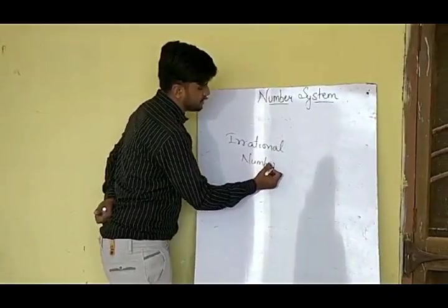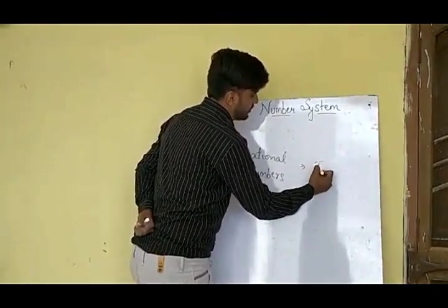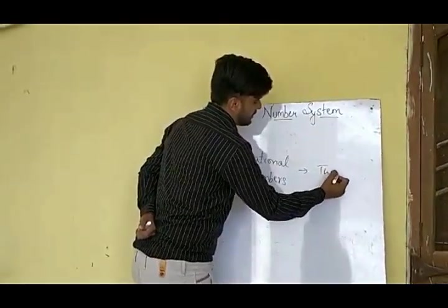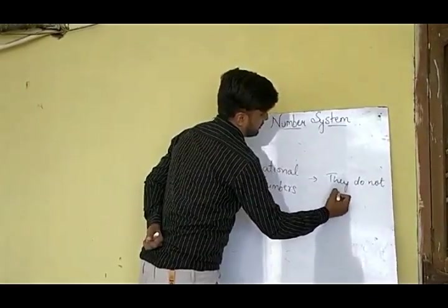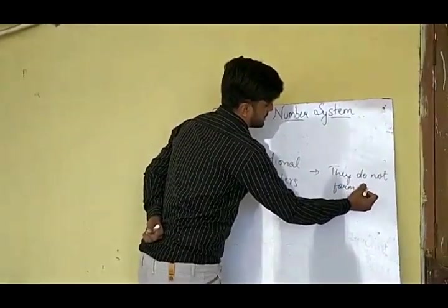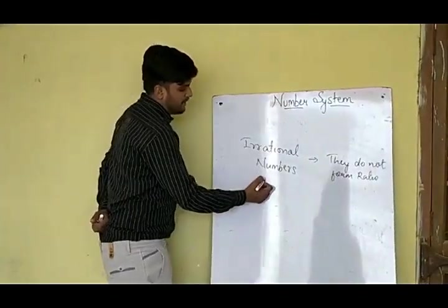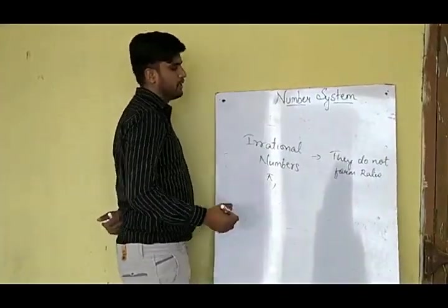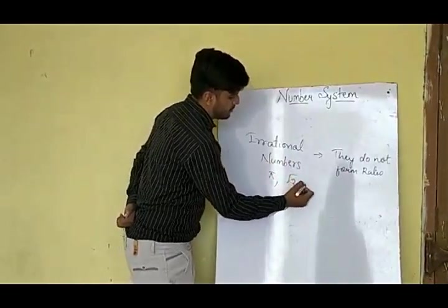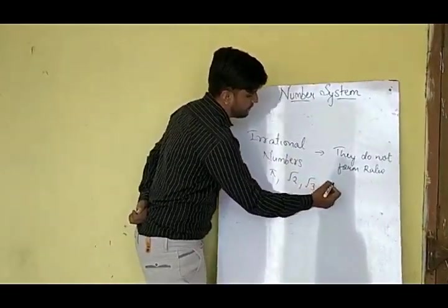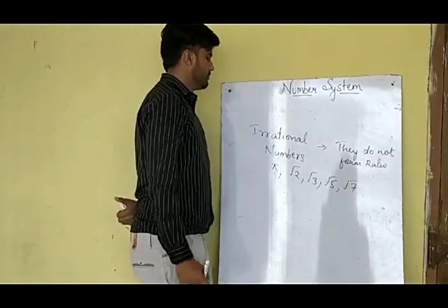Irrational numbers do not form any ratio. They cannot be represented in the form of p upon q. Examples include the value of pi, and any root that is not a perfect square — such as root 2, root 3, root 5, root 7. All of these come under irrational numbers.